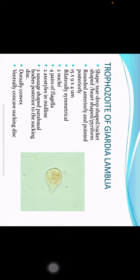Trophozoites of Giardia lamblia: tear-drop in shape, also described as racket-shaped, heart-shaped, or pyriform. They are rounded anteriorly and pointed posteriorly. Dimensions are 15 by 9 by 4 micrometers. They are bilaterally symmetrical, have two nuclei, four pairs of flagella, two axostyles in the midline, and two sausage-shaped parabasal bodies posterior to the sucking disc. They are dorsally convex and ventrally concave at the sucking disc.